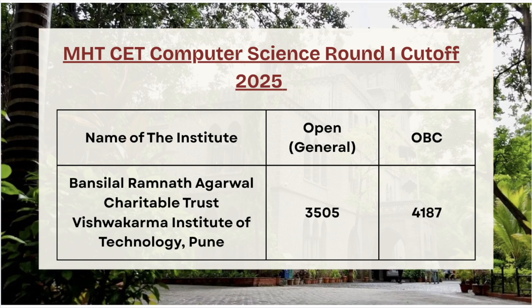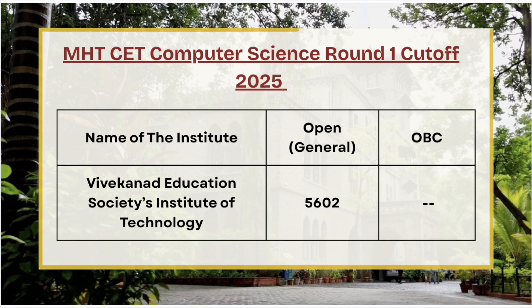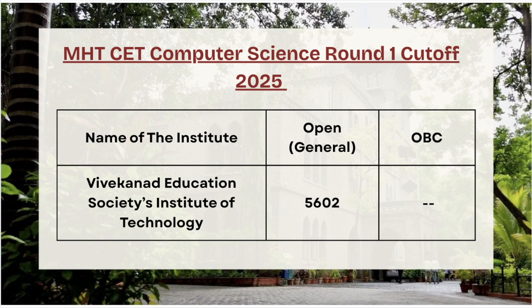Moving ahead we have BRA Charitable Trust Vishwakarma Institute of Technology. For open category the cutoff rank is 3505, and for OBC category the cutoff rank is 4187. Next in the list we have Vivekananda Education Society Institute of Technology — for open category the cutoff rank is 5602.